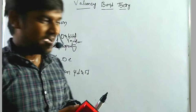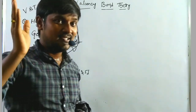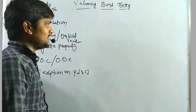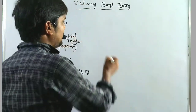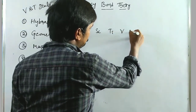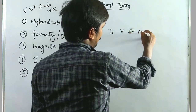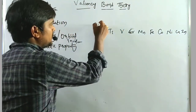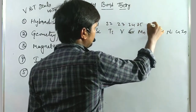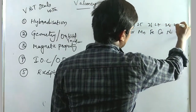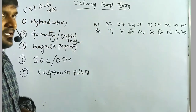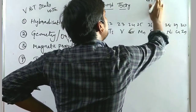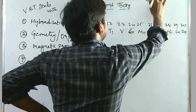Here we discuss elements 21 to 30: scandium, titanium, vanadium, chromium, manganese, iron, cobalt, nickel, copper, and zinc — atomic numbers 21 through 30. For element 21, the nearest noble gas is argon with atomic number 18. Argon's configuration is 1s², 2s², 2p⁶, 3s², 3p⁶.